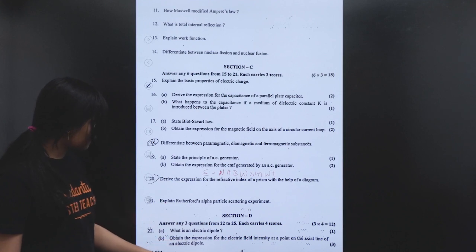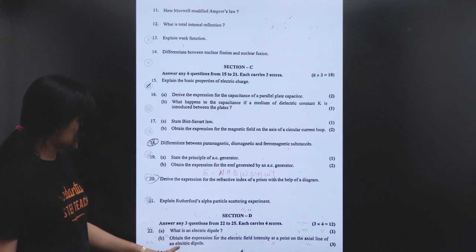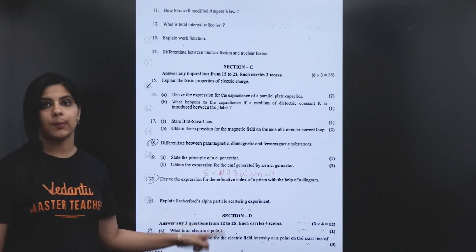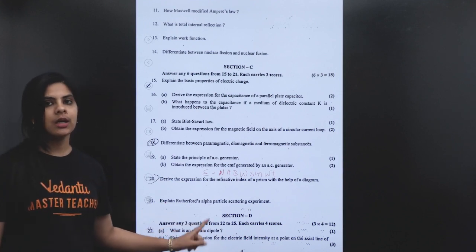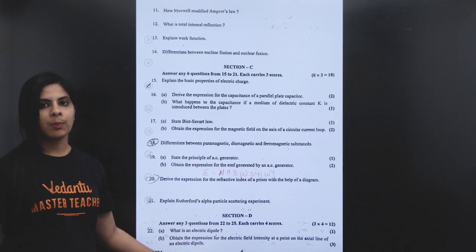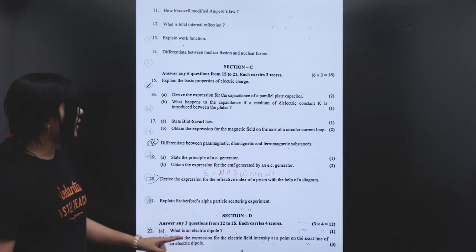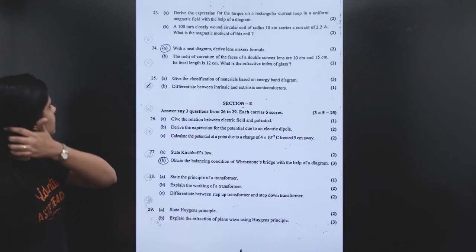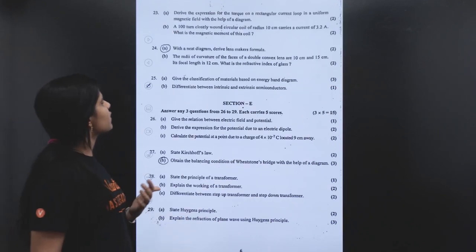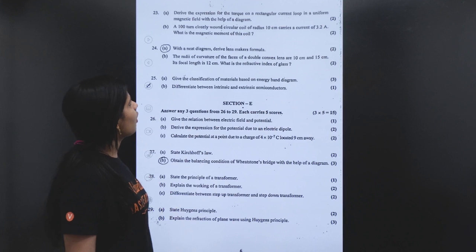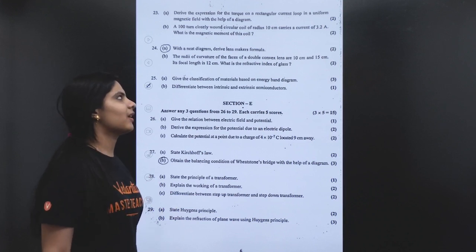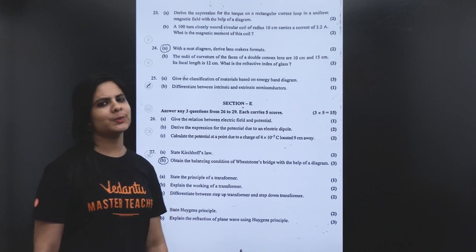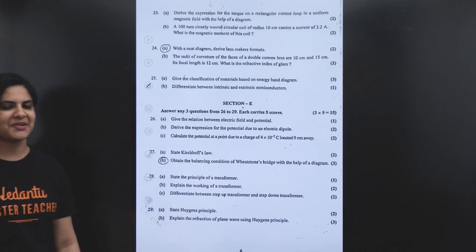Obtain the expression for the electric field intensity at a point on the axial line of an electric dipole. Derive the expression for the torque on a rectangular current loop.